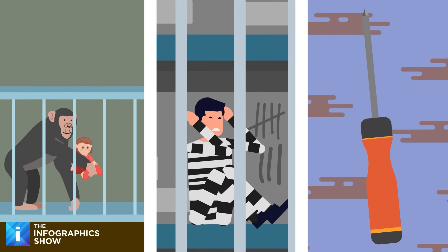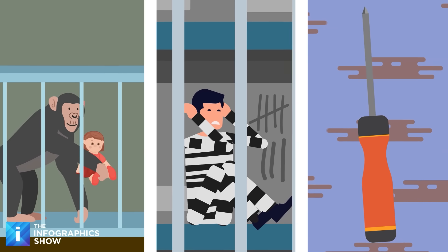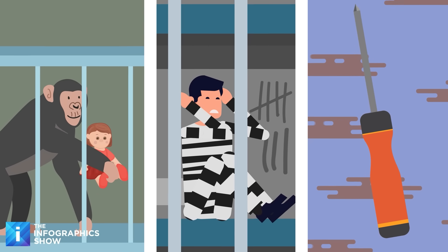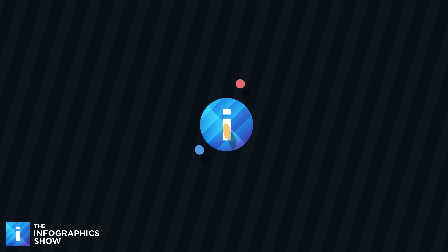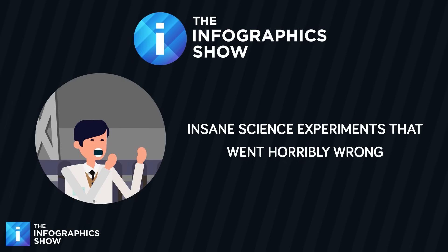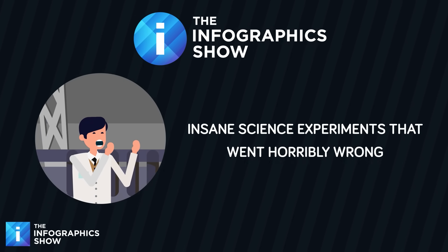The Soviet scientists trying to get chimps pregnant with human babies, the university building that transformed into a sadistic prison, and the scientific screwdriver accident that caused one of the most painful deaths in history. And that is just the beginning. Dust off your lab coats and grab your goggles, we're going to need them on today's episode of the Infographics Show - Insane Science Experiments That Went Horribly Wrong.